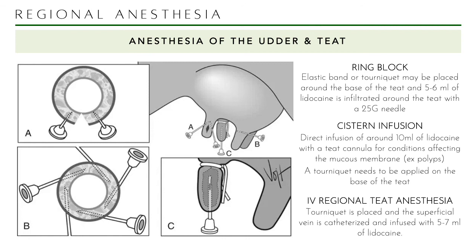Anesthesia of the udder and teat is quite complicated for nerve blocks because the cranial aspect has a different innervation from the caudal aspect. The cranial aspect is supplied by the first and second lumbar spinal nerves, while the caudal aspect is supplied by the third and fourth lumbar spinal nerves. It would be difficult to do pyrovertebral nerve blocks or epidurals just for these small anatomical structures, so local anesthesia is the best option for them.